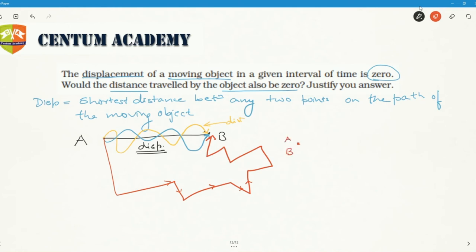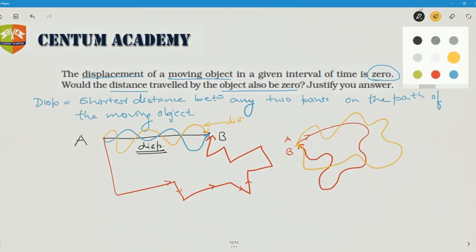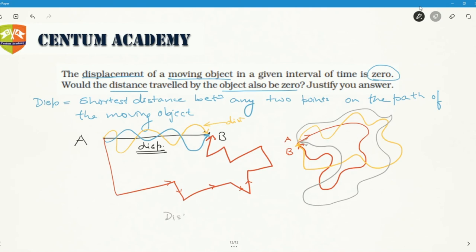But the distance need not be zero. Why? Because let's say the body started and moved along this path and then finally went to the same point - the starting point and final destination are the same. Then the displacement is zero because the shortest distance between two coinciding points is always zero. But there could be infinite distances possible. There could be multiple choices of the path it takes to come back to the same point. So in this case, though the displacement is zero, distance is not zero.